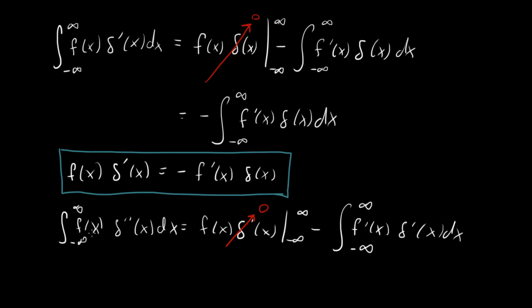And so we're left with this integral right here. Our original integral, f of x delta double prime of x is equal to minus f prime of x delta prime of x. But we can use the exact same thing that we learned up here to evaluate this integral. And what we find is that f of x delta double prime of x dx is equal to positive integral minus infinity to infinity f double prime of x delta of x dx.